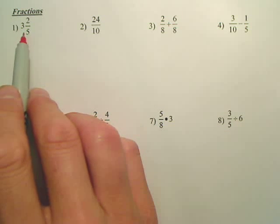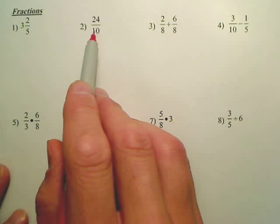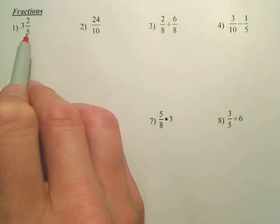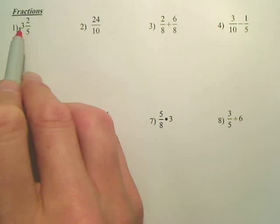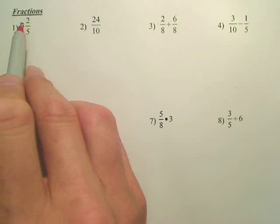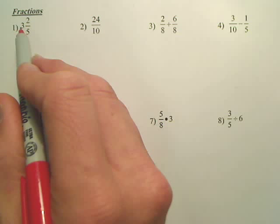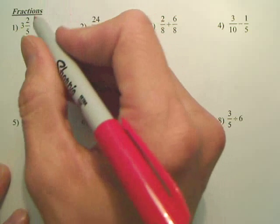All right, I want to change this to look like this. So what I basically would do, we'll multiply the 5 times the 3 and add the 2. So 5 times 3 is 15. 15 plus 2 is 17.